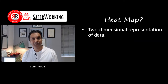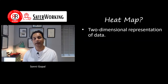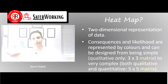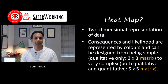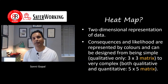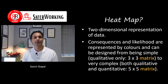One way of doing this is through heatmaps. A heatmap is essentially a two-dimensional representation of data. You take all the consequences and likelihoods that you've identified from your risk assessments and you can put them into a simple matrix format.